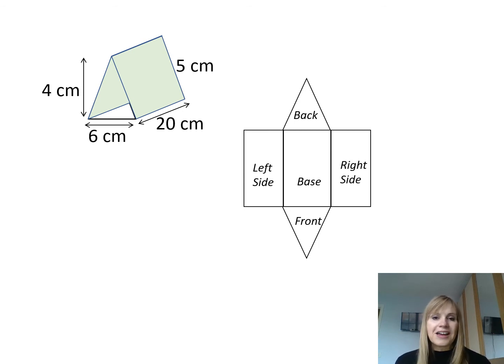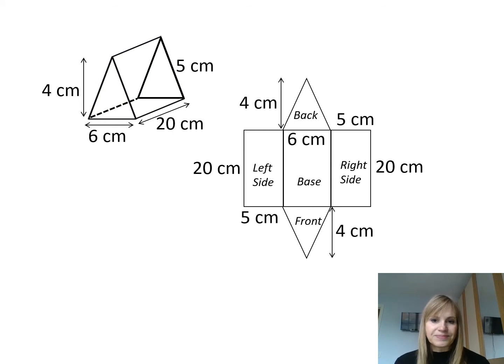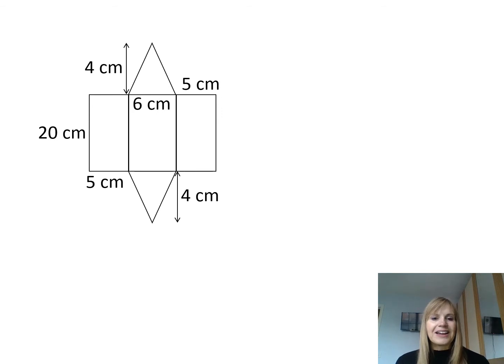When I've drawn my net I can add in my dimensions. Okay, when I've put in my dimensions and drawn a net I can then label my different shapes A, B, C, D, and E, and I can find the area of each of those individual shapes.